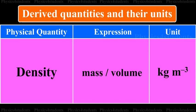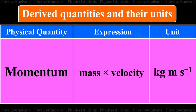Physical quantity is density. Its expression is mass by volume. Its unit is kg m raised to minus 3. Physical quantity is momentum. Its expression is mass into velocity. Its unit is kg m s raised to minus 1.